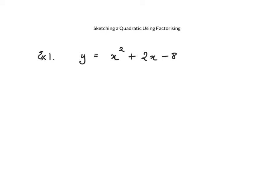We're going to make use of factorising to find the x-intercepts, which is to say the points where the graph of the quadratic function cuts the x-axis. The x-intercepts are always found when y equals 0. This will gradually become clear as we do more examples.